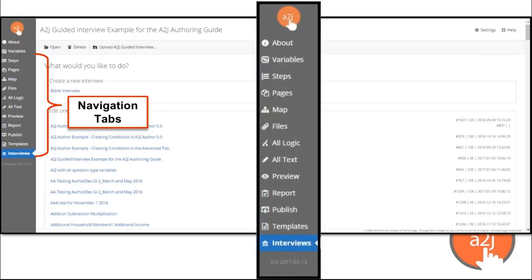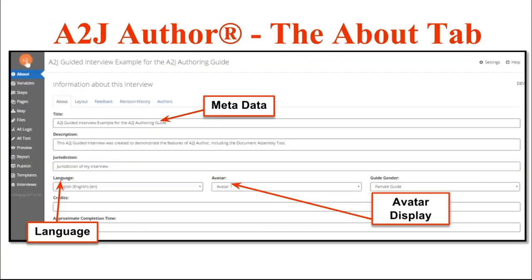This is a zoom in of our navigation tabs. The first tab is the About tab. The About tab is where you as the author place metadata about the interview itself and set certain variables that will dictate how the interview looks to the end user.